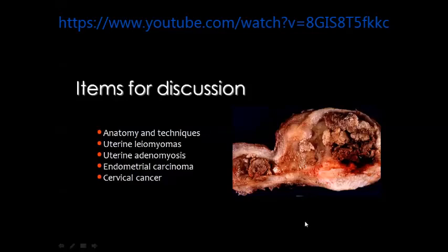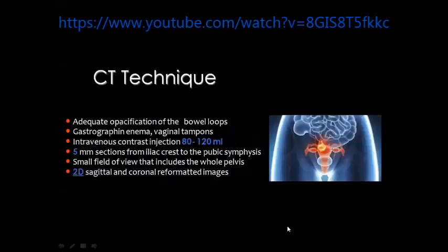In two other separate lectures I will deal with ovarian pathology and the rest of the organs, like lesions of endovaginal pathology and so on. To examine the pelvis for male and female we usually use almost the same technique, but in the female patient we need some precautions and more preparations so that we are able to adequately delineate the pelvic organs, especially the ovaries, which are somewhat difficult to delineate by CT scan.